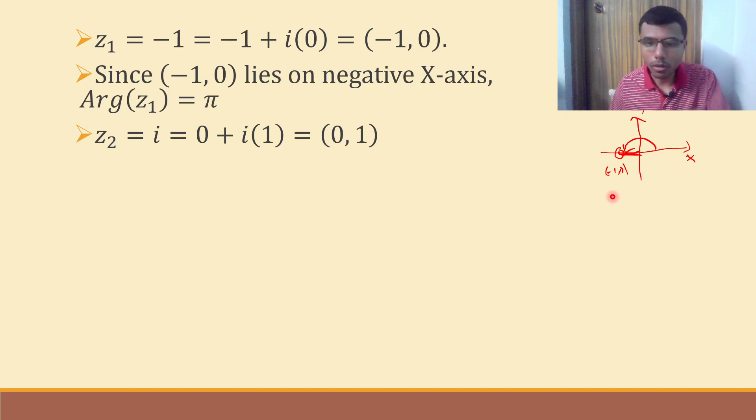Now this 0 comma 1, if I were to plot it, this would be 0 comma 1. Now connect origin and this, so see this would make something like 90 degrees, so the argument is π by 2.